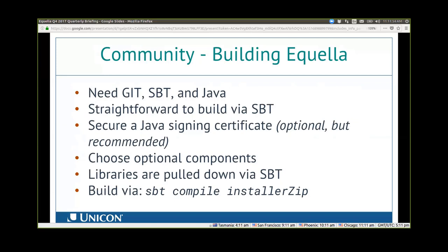Getting a Java signing certificate from a trusted signing authority keyed to your institution is recommended but optional. If you just want to try out Aquela, you can download Git, SBT, and Java, clone the Aquela repo and build it — SBT will create its own temporary signing certificate. This signing certificate is used for the admin console, the file manager, and the in-place file editor. You then need to choose optional components. Without them, you won't have the ability to use Oracle database as a backend or Kaltura integration.